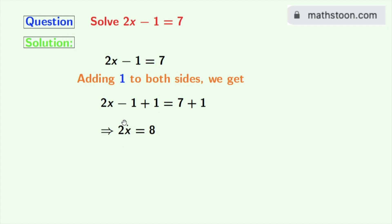Notice that the coefficient of x is 2. That's why we will divide both sides by 2. And here, 2 and 2 get cancelled. So we get x on the left hand side and on the right hand side, 8 divided by 2 is 4. So we get x = 4 as our final answer.